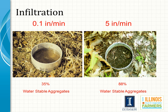Measuring infiltration is a fairly simple test — you put a ring into the soil, add an inch of water, and time how quickly that water moves into the soil. In general, if the soil has excellent aggregation and strong aggregate stability, there's plenty of open pore space for that water to quickly move in. If we don't have that, you would generally see very slow infiltration and the potential for runoff and other problems.